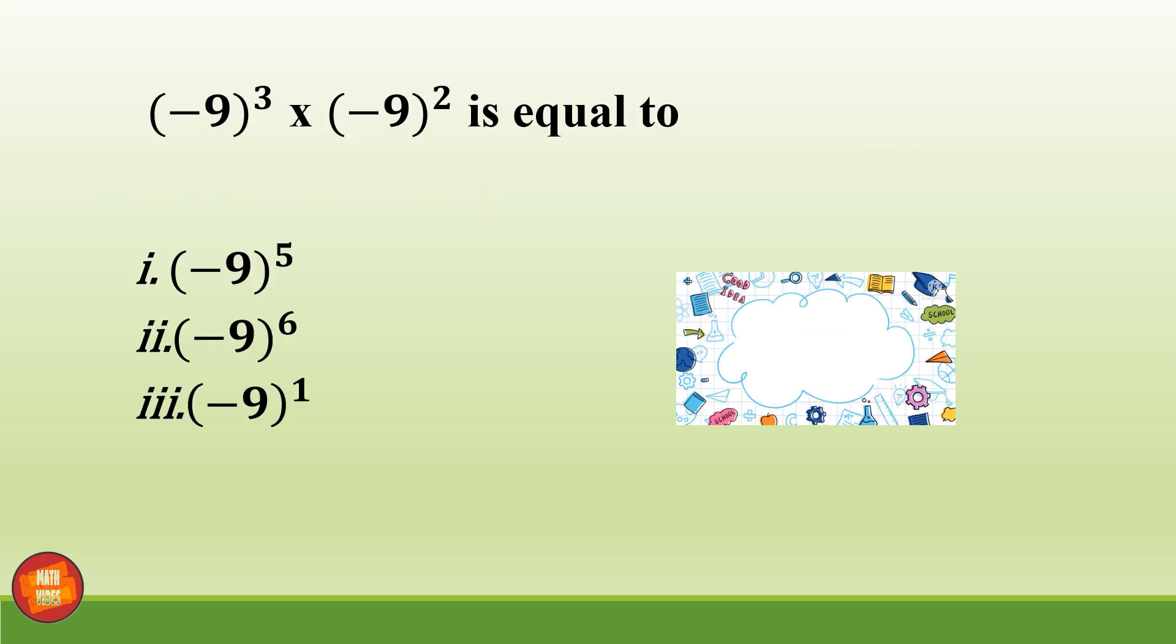Next, minus 9 raised to the power 3 into minus 9 square is equal to, and the answer is first option minus 9 raised to power 5.